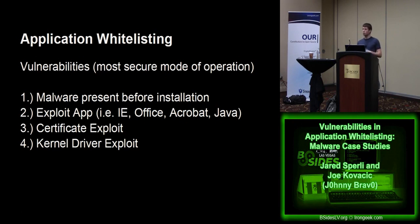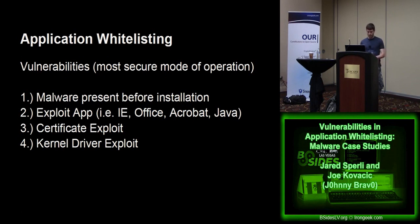Another way to bypass application whitelisting is to exploit an existing application that you said is legitimate - something like Internet Explorer, Microsoft Office, Adobe Acrobat, or Java. All of these are vectors by which clever individuals are capable of running malicious code on the endpoint. And then the other two ways we'll explore in the demo are certificate-based exploits - those signing certificates used to authorize applications to run on a system - or to simply take advantage of the architecture of application whitelisting solutions to slip your own kernel-level driver underneath.